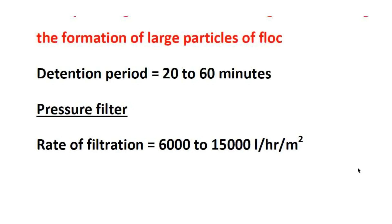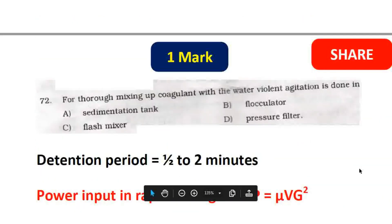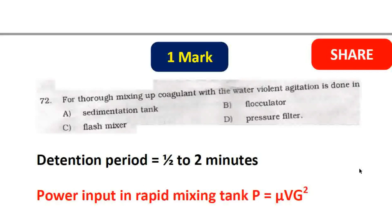Slow sand filter rate is 100 to 200 litres per hour per metre square. Rapid sand filter is about 30 times faster — 3,000 to 6,000 litres per hour per metre square. For thorough mixing of coagulant with water, violent agitation is done in the flash mixer, option C.